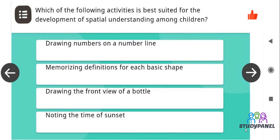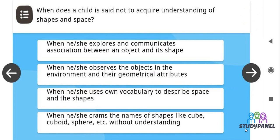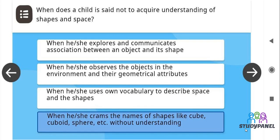Which of the following activities is best suited for the development of spatial understanding among children? The correct answer is drawing the front view of a bottle. When does a child is said not to acquire understanding of shapes and space? When he or she crams the names of shapes like cuboid, sphere, etc. without understanding.